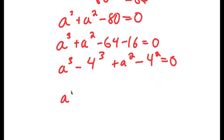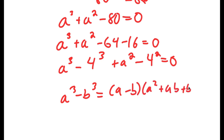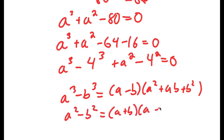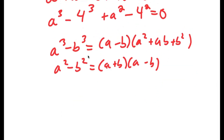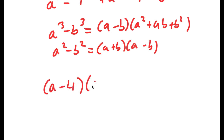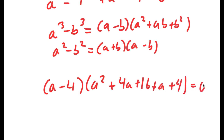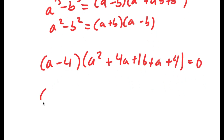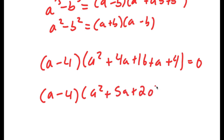Using the difference of cubes formula — a³ minus b³ equals a minus b times a squared plus ab plus b squared — and the difference of squares formula — a² minus b² equals a plus b times a minus b — I end up with a minus 4 times a squared plus 4a plus 16 plus a plus 4 equals 0. This simplifies to a minus 4 times a squared plus 5a plus 20 equals 0.